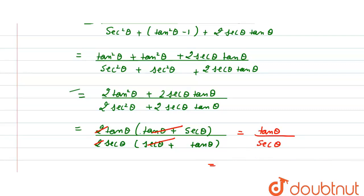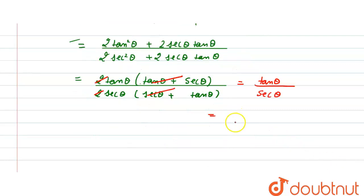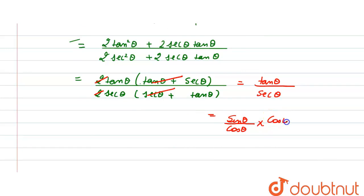Now converting to sin θ and cos θ form: tan θ becomes sin θ / cos θ, and sec θ becomes 1 / cos θ since sec θ is the reciprocal of cos θ. So we get sin θ. Hence, the result is proved.